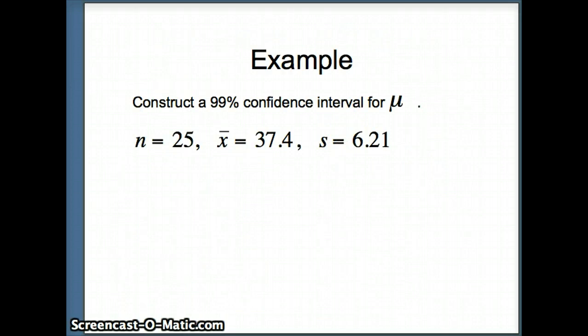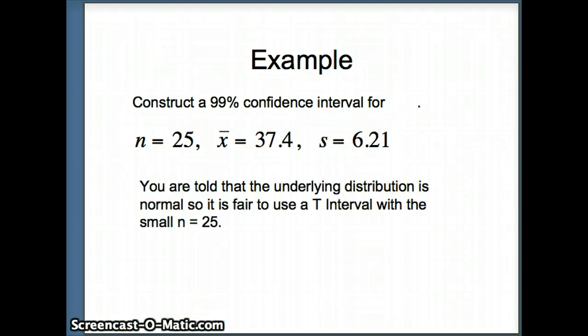Okay, here's another example. This time we want to construct a 99% confidence interval for mu. So I have n is 25, I have x bar is 37.4, and I have s is 6.21. But remember, to do the t interval, I have to match the assumptions of the central limit theorem. And the central limit theorem tells us that n has to be large. n is not large here. n is 25. But it will be fair for me to do this if the underlying sample is normal. The underlying distribution is normal. If the distribution is normal, then it's fair to use the central limit theorem for any n. So let's say that we're told that the underlying distribution is normal. Therefore, it is fair to use a t interval with a small n of 25.